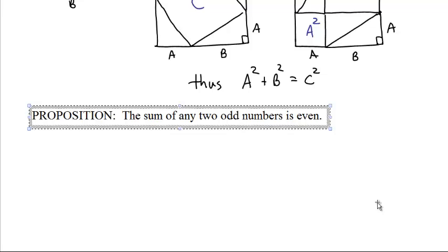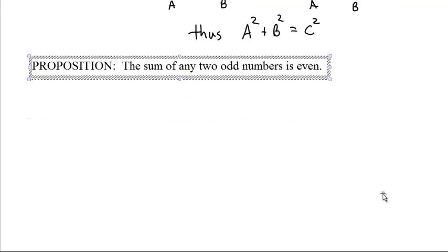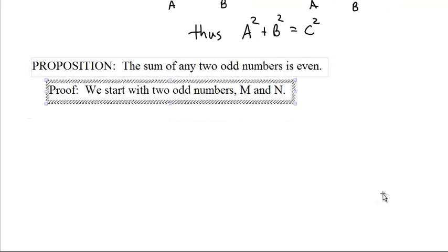And a lot of this is going to come from, what does it mean to be even and odd? Okay, so, proof. We start with two odd numbers, m and n.